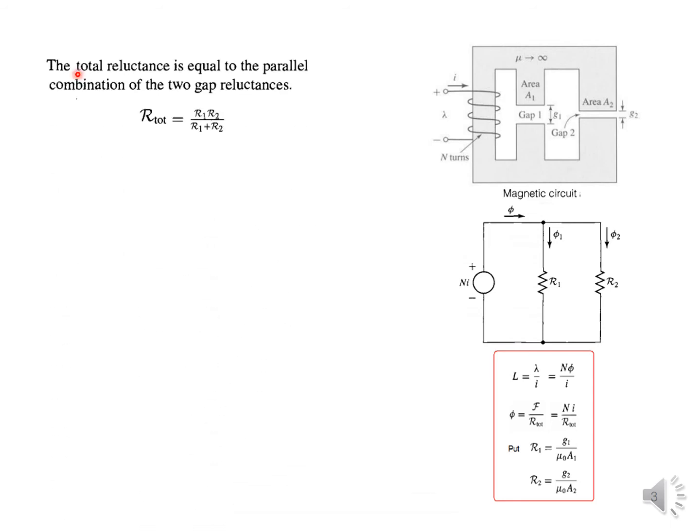Now the total reluctance is equal to the parallel combination of the two gaps, so we can just combine them in parallel. So our R_total will be (R1 * R2) / (R1 + R2). I hope you know how to solve two resistances in parallel - same technique. And phi from the formula phi is F divided by R_total.